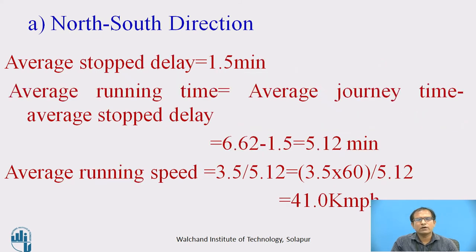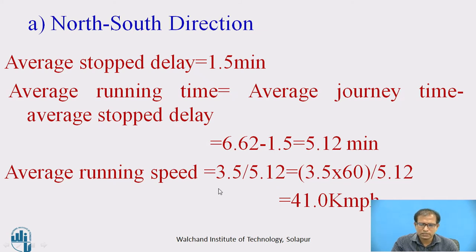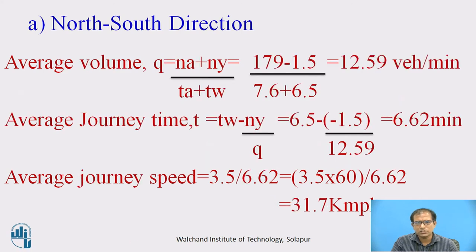For the average running speed, running speed excludes delays. So we deduct the stop delays from the journey time to get the average running time, then calculate: distance / running time × 60 = 41 KMPH. Running speed is greater than journey speed because journey speed includes stop delays. The final values for north-south direction: average running speed = 41 KMPH, average journey speed = 31.7 KMPH, and average volume = 12.59 vehicles per minute.